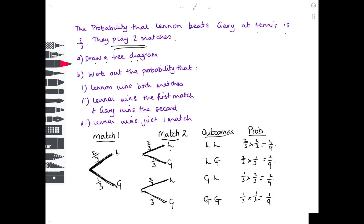Now we're all set up and the rest of the question is very easy. Lennon winning both matches: looking at your listing, that's 4 ninths. Lennon winning the first match and Gary winning the second: that's 2 ninths. Lennon wins just one match — he can win just one match either where he wins the first and Gary wins the second, or where Gary wins the first and Lennon wins the second. Two different ways, so we add the two probabilities: 2 ninths plus 2 ninths is 4 ninths.